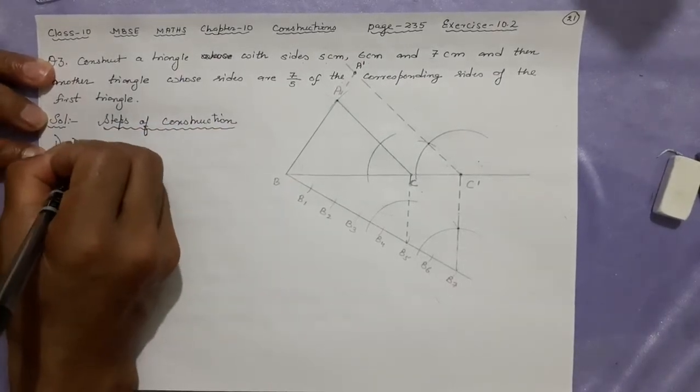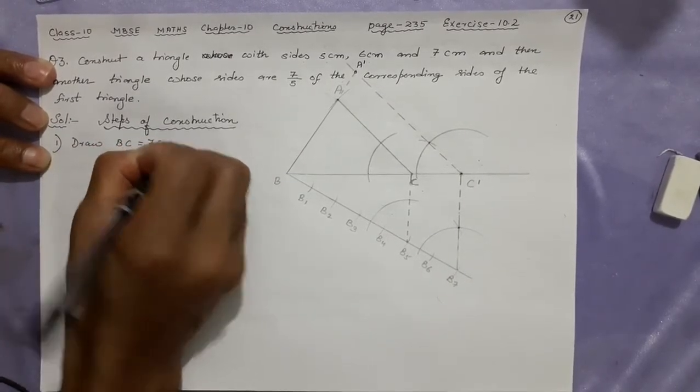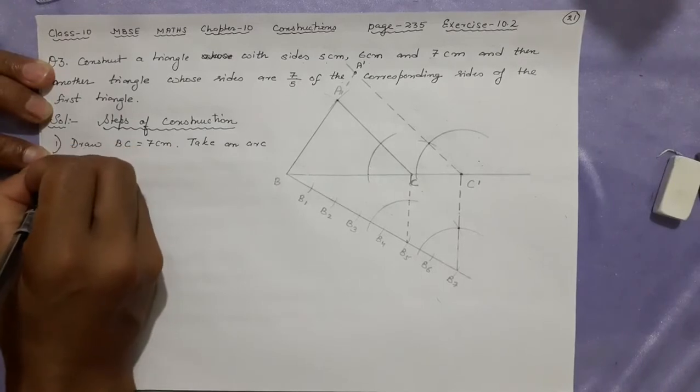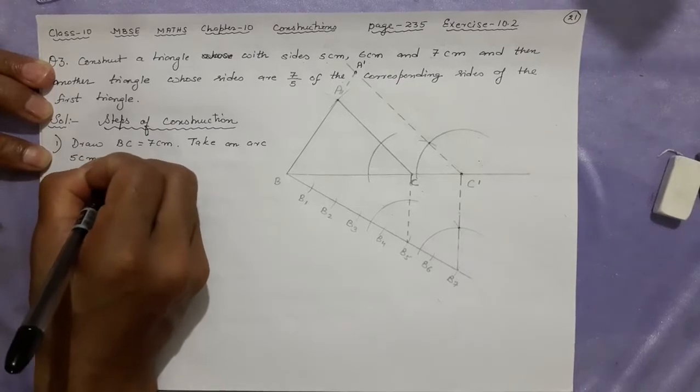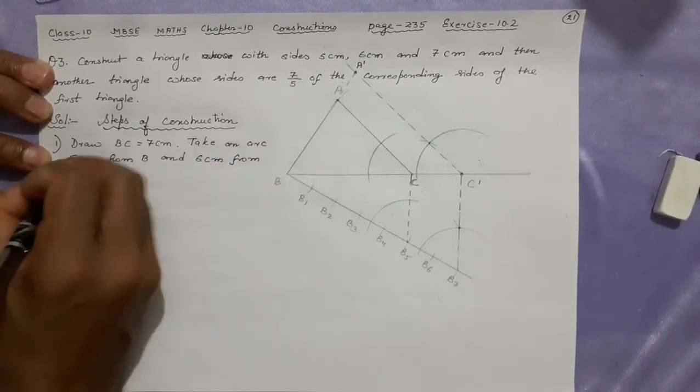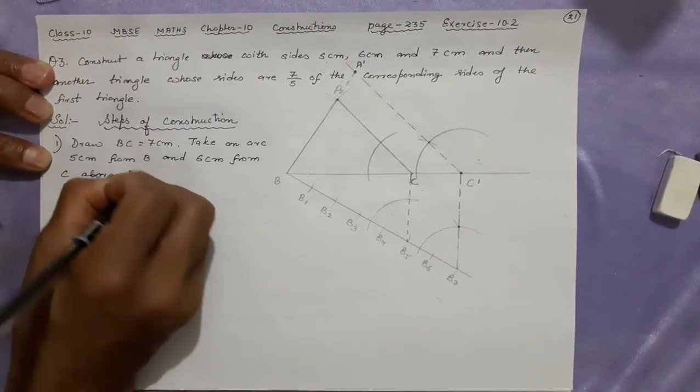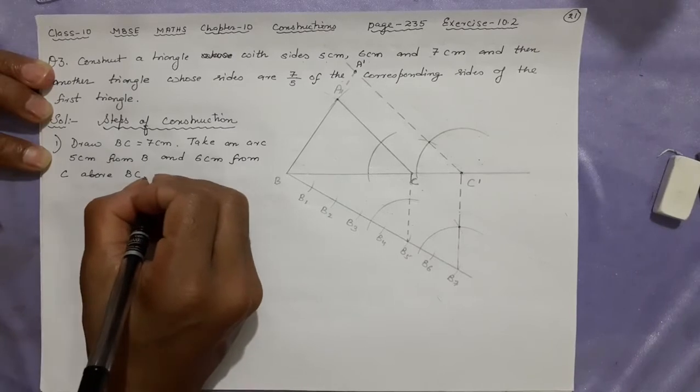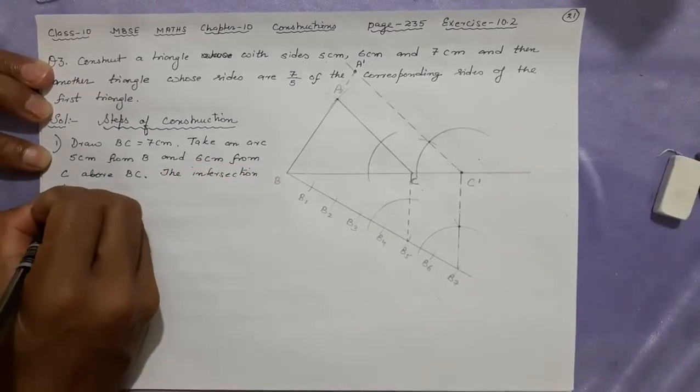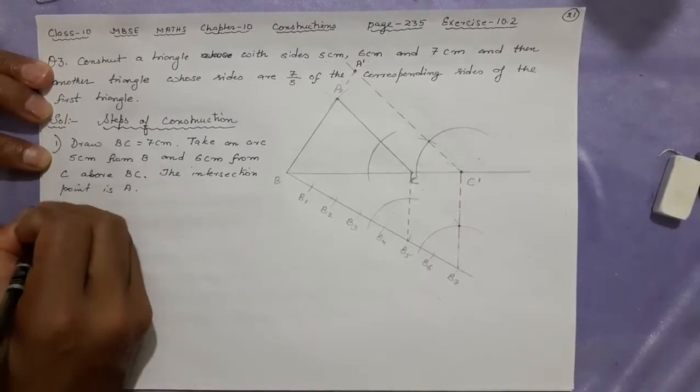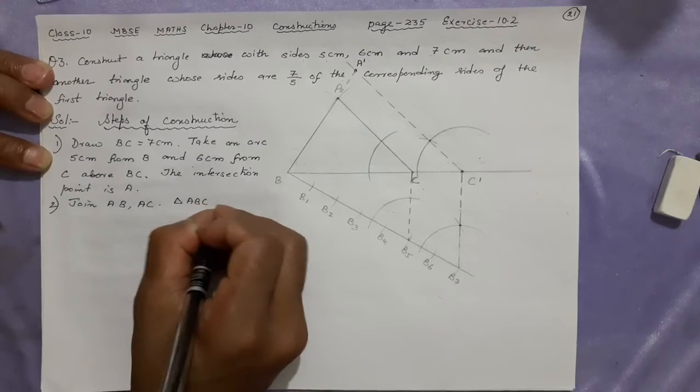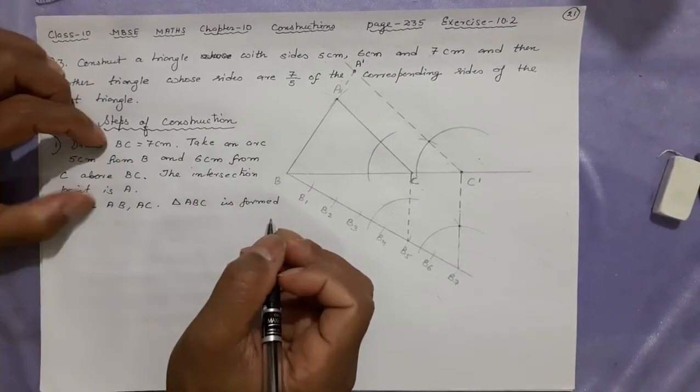Number 1. Draw BC equal to 7 centimeter. Take an arc 5 centimeter from B and 6 centimeter from C above BC. Intersection point is A. Let's just make it. Join A, B, C. Triangle ABC is formed. I took two steps to make this step. Earlier in one step also you can finish.